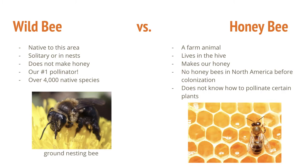An example I always give is pumpkins — honeybees aren't really great at pollinating pumpkins, but there are specific types of wild bees that are amazing at pollinating pumpkins. Another thing to keep in mind is there are over 4,000 native species of wild bees right here in Wisconsin alone. That'd be like walking down the street and seeing about 4,000 different types of dogs. They come in all different shapes, all different colors, all different sizes, as you can kind of see throughout our next slide.